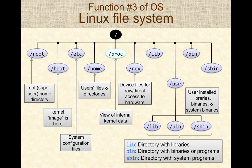In Linux, the file system is organized with a slash (/) or root at the top. Under root you see a variety of subdirectories. There is /root which is the home directory for the super user, while regular user files are stored in /home. There is also /dev which exposes device files for raw direct access to hardware. Each of these directories has specific organization and types of files stored within them on a Linux file system.